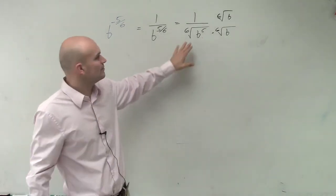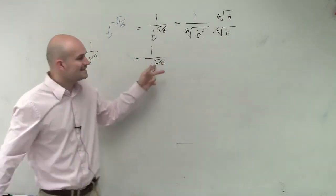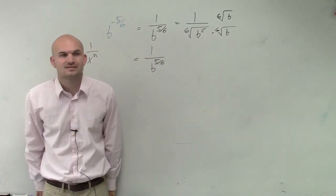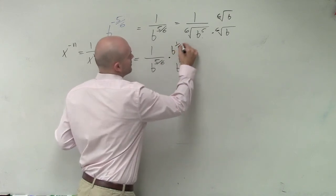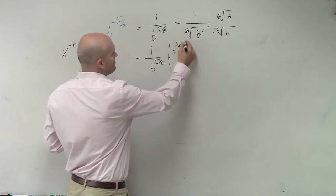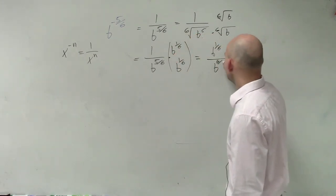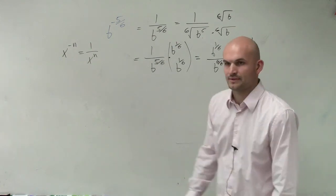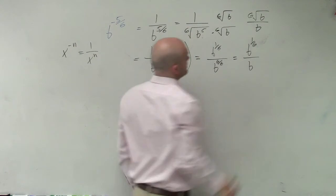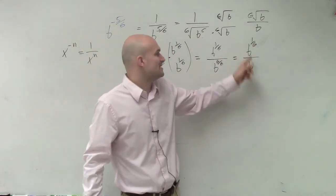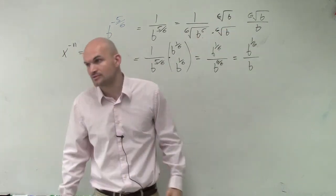But now, ladies and gentlemen, we don't need to show this in radical form — we can also just show this in rational form. If I need to get my exponent to be 1, what do I need to add to 5/6 to make it 6/6, or 1? That's 1/6. So I can simply multiply by b to the 1/6 power on the top and the bottom. If I multiply the top and the bottom by b to the 1/6, I obtain b to the 1/6 over b to the 6/6, which equals b to the 1/6 over b. It's the same thing — you still would have got the sixth root of b over b. Is the sixth root of b over b the same thing as b to the 1/6 power over b? Yes, it's the exact same thing. Here's the way of doing it with rational expressions; here's the way of doing it with radicals.